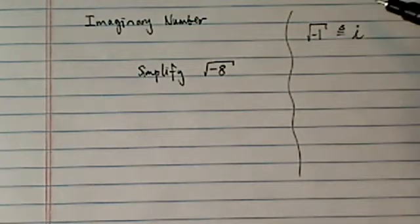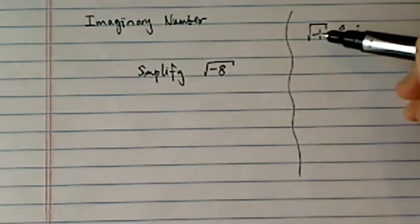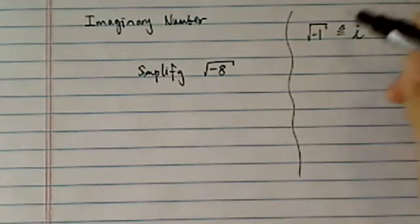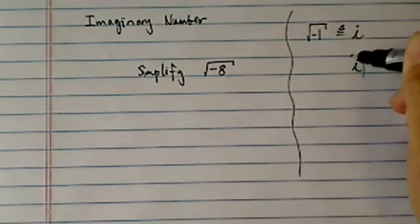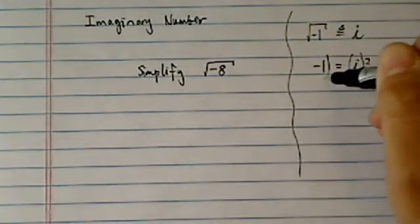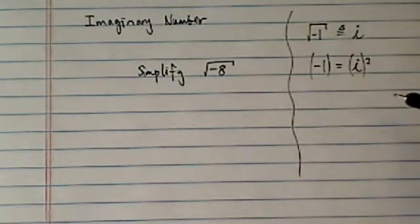Someone made up this rule, said square root of minus 1 is equal to i, which means if you square both sides, i squared is equal to minus 1. Now how odd is that?